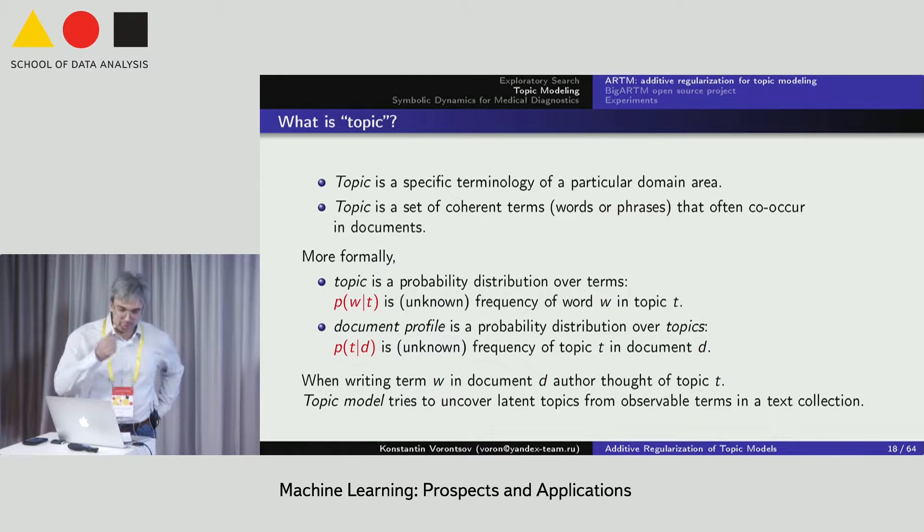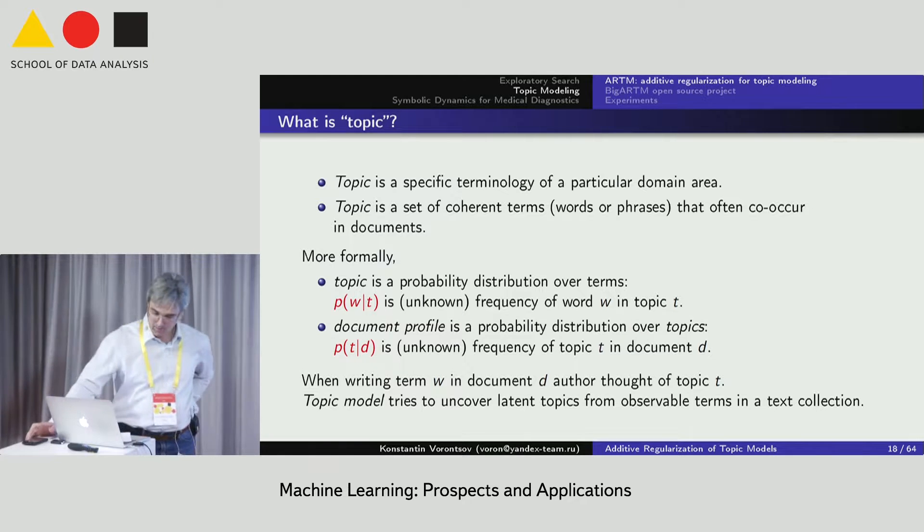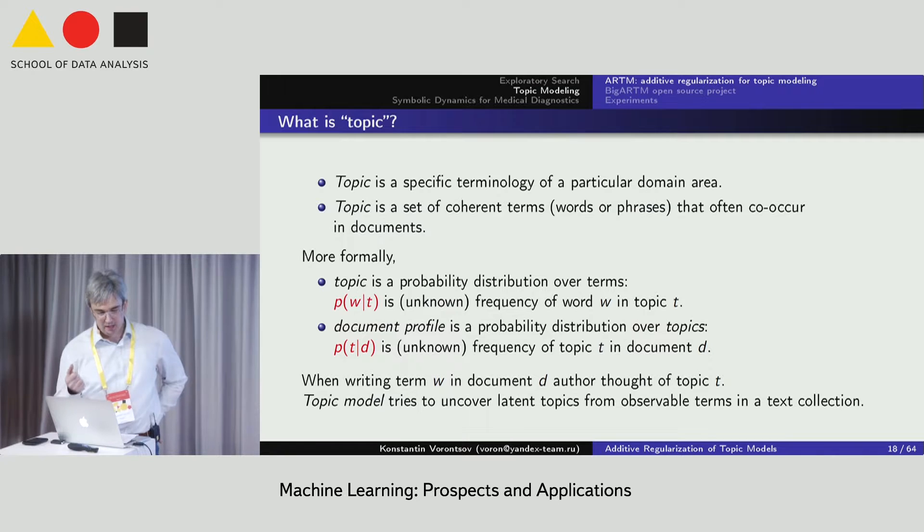How to implement this dream? Let us start from definitions. Intuitively, topic is a set of coherent terms from a particular domain area. More formally, topic is a probability distribution over terms. For example, we distinguish mathematical and biological texts by frequencies of terminological words. On the other hand, we would represent each document by probability distribution over topics. This distribution is a very compressed representation of the document semantics that we are going to use for building inverted index in exploratory search engine.